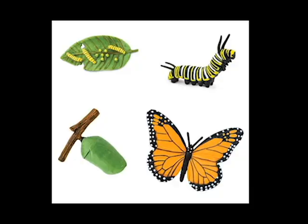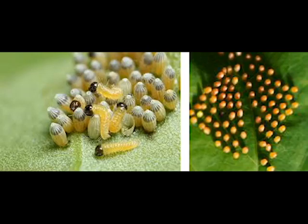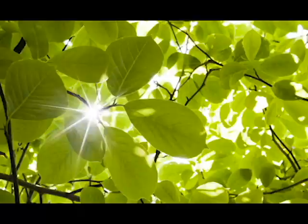The butterfly has a four-stage life cycle. A butterfly starts its life as a small, round, oval or cylindrical egg. The egg shape depends on the type of butterfly. These eggs are usually found laid on the leaves of plants.